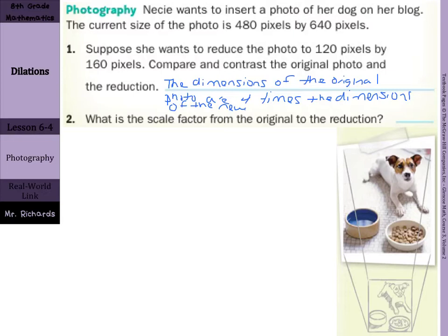What is the scale factor from original to reduction? We're going to say that's 1 fourth as 480 times 1 fourth gets you the 120 and 640 times the 1 fourth gets you to 160.